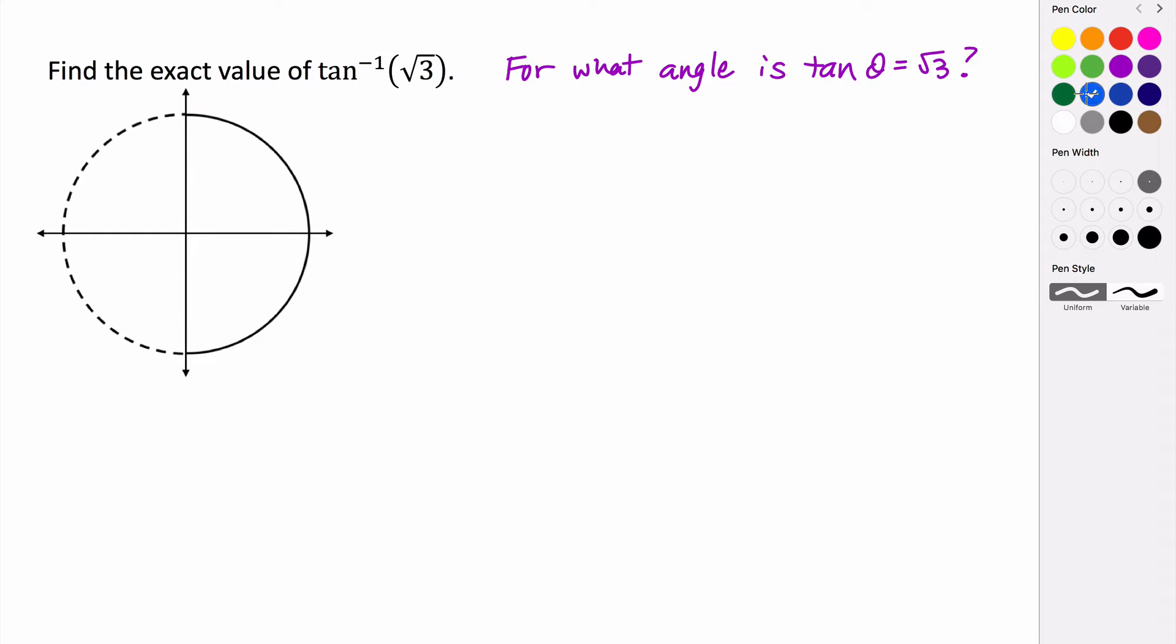So the quadrants that the tangent is restricted to are quadrants 1 and 4. Now, because the value in the argument of our inverse is positive, that tells us we're going to be in quadrant 1. It's quadrant 1 because this is positive.